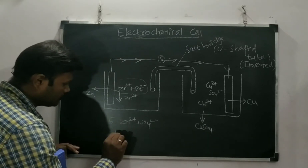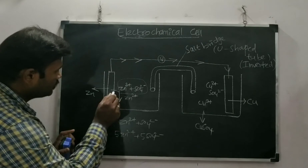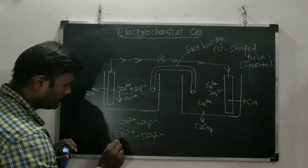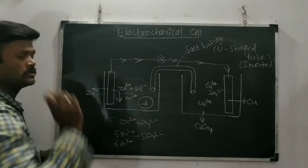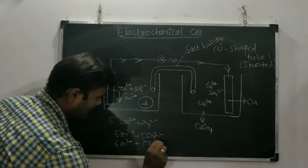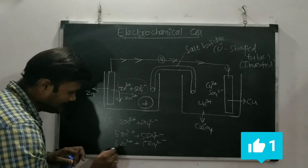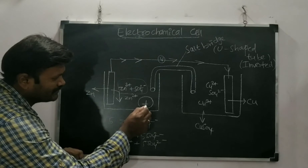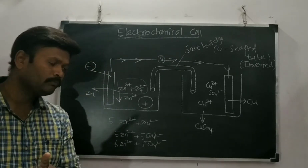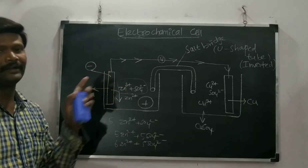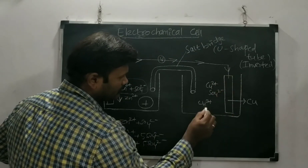Suppose we initially have 5 moles of Zn²⁺ and 5 moles of SO₄²⁻. But as the zinc rod dissolves, say 6 moles of Zn²⁺ enter the solution. Now we have 6 moles Zn²⁺ and 5 moles SO₄²⁻ — the solution is no longer neutral; it attains a positive charge. At the same time, the electrode gets a negative charge because the electrons leave through the wire. On the cathodic side, Cu²⁺ is being consumed.